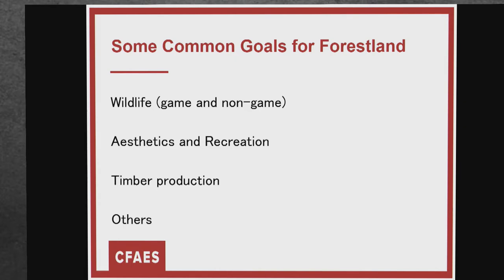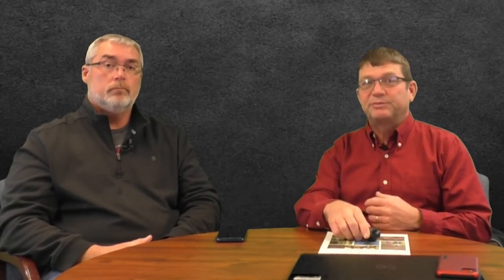Timber production falls a bit lower for most woodland owners, but a lot of them end up cutting timber. The cool thing is you can have more than one goal — you can be managing for timber, wildlife, and recreation all at the same time. A lot of times the trees we're managing for timber are also good for wildlife. It could be something really unique, like you might be a woodland owner who wants to produce maple syrup. If you've got maple trees, we can make them grow faster and produce more maple syrup.